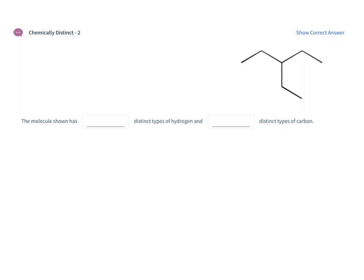In this problem we want to figure out the distinct types of hydrogens in the molecule and the distinct types of carbon in the molecule. What you should immediately recognize is three of the same group. We have the central carbon and there's an ethyl group, an ethyl group, and an ethyl group coming off of it.